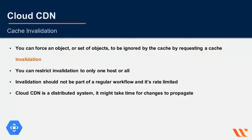Once an object is cached it normally remains in the cache until it expires or is evicted to make room for new content. You control the expiration time through standard HTTP headers. You can also force an object or set of objects to be ignored by the cache by requesting a cache invalidation. You can restrict invalidation to only one host or all hosts. Invalidation should not be part of a regular workflow and is rate limited. Cloud CDN is a distributed system, so it may take some time for changes to propagate.